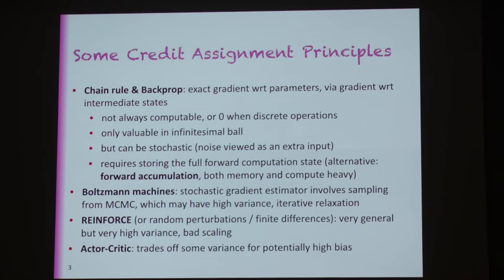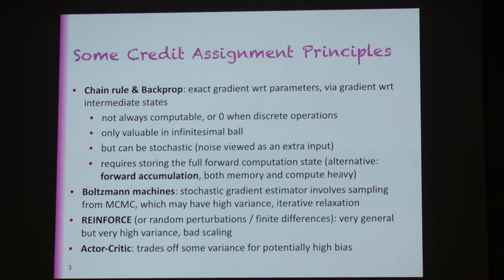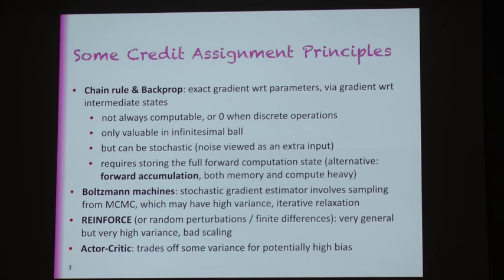Backprop is not always computable. The exact gradients could be intractable because we run very large sums, or maybe it's not useful. For example, if your computation graph includes discrete operations, then you get zeros — yet you'd like information about which direction parameters should change nonetheless. What gradient and backprop are really telling us is: if we were to make an infinitesimal move, in which direction should we go? But in reality, we're going to make a slightly bigger move, so the optimal non-infinitesimal change may not be the same as the gradient. That also motivates second-order methods.